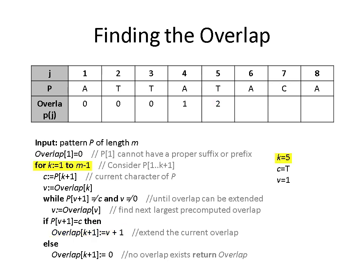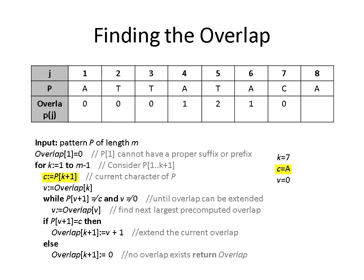For position 6, our current character is A, V equals 2, and our while statement is satisfied, so we enter the while loop. V is set as 0, and now the while statement is not satisfied, so we exit the loop. The if statement is satisfied, and the overlap of position 6 is set as 1. For position 7, our current character is C, V equals 1. The while statement is satisfied, V is set as 0, we exit the while loop, the if statement is not satisfied, so the overlap of position 7 is set as 0. For the final position, position 8, our current character is A, V equals 0. We do not enter the while loop, but we do enter the if statement, and the overlap of position 8 is set as 1.